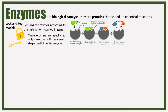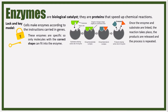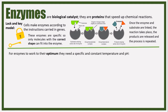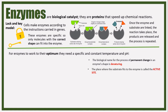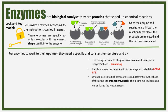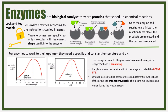I strongly recommend pausing this video to look at the diagram. Once the enzyme and substrate are linked, the reaction takes place, the products are released, and the process is repeated. For enzymes to work at their optimum, they need a specific and constant optimum pH and temperature. The biological name for the permanent change in an enzyme's shape is denaturing - once an enzyme is denatured, it stops working completely. The place where the substrate fits to the enzyme is called the active site, and when denatured the change is irreversible.